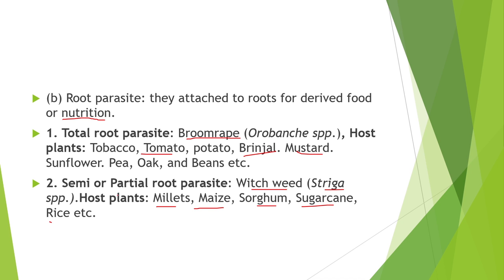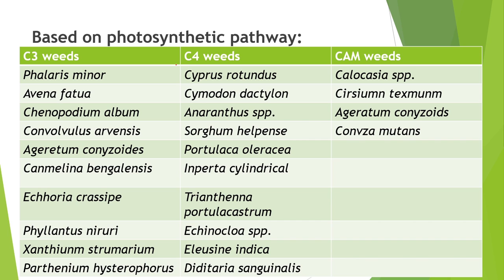Next classification is based on photosynthetic pathway — may be C3 weed, C4 weed, and CAM weed. C3 weeds show C3 cycle, C4 weeds show C4 cycle, and CAM weeds show CAM cycle. Examples of C3 weeds are Phalaris minor, Argemone, Chenopodium album, Convolvulus arvensis, Ageratum conyzoides, Commelina benghalensis, Eichhornia crassipes, Phyllanthus niruri, Xanthium strumarium, and Parthenium hysterophorus.